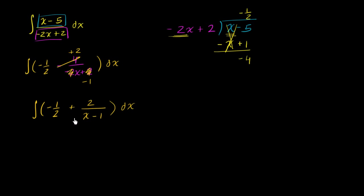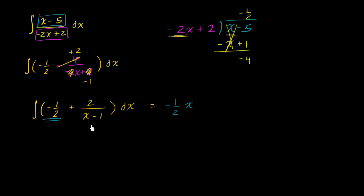Now, how do we evaluate this? The antiderivative of negative one half is pretty straightforward — that's just going to be negative one half x. But what's the antiderivative of two over x minus one? You might be able to do this in your head: the derivative of x minus one is just one, so the derivative is already sitting there. We can essentially do u-substitution in our heads and say the antiderivative with respect to x minus one would be the natural log of the absolute value of x minus one.